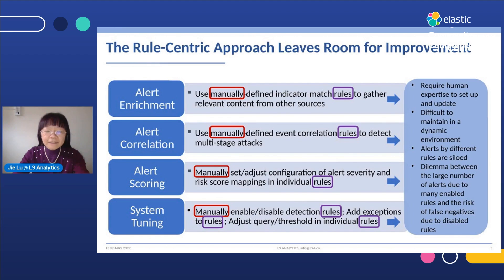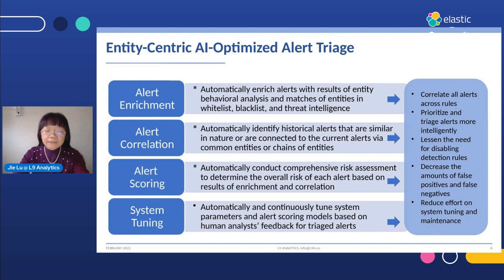The question is: can we automate some tasks in alert triage to reduce manual effort, improve the productivity of human analysts, and let them avoid the dilemma of whether to turn on or off certain detection rules? Our answer is yes. We introduce an AI-optimized alert triage application on top of Elastic SIEM. It automatically enriches alerts with results from entity behavior analysis and matches against whitelist, blacklist, and threat intelligence data. It correlates all alerts across rules, including not only the current alert but also recent alerts in history.